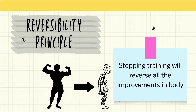The reversibility principle states that stopping training will reverse all the improvements in the body. As the picture clearly shows, if a bodybuilder stops training for a long period of time — as long as two to three months — those muscles will lose their tightness and the improvements will be lost.